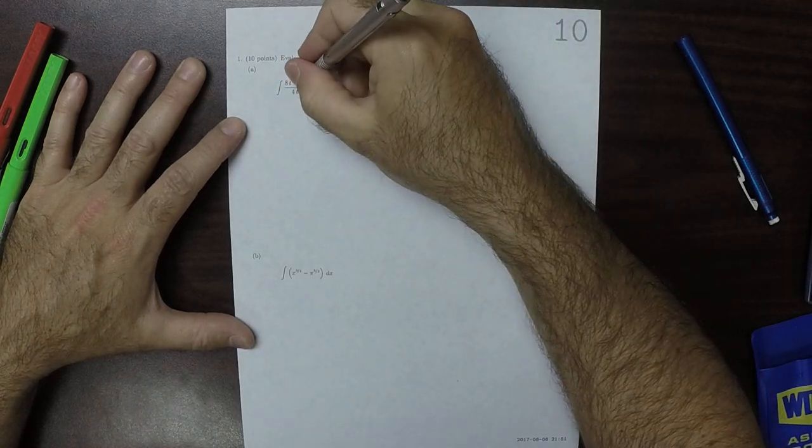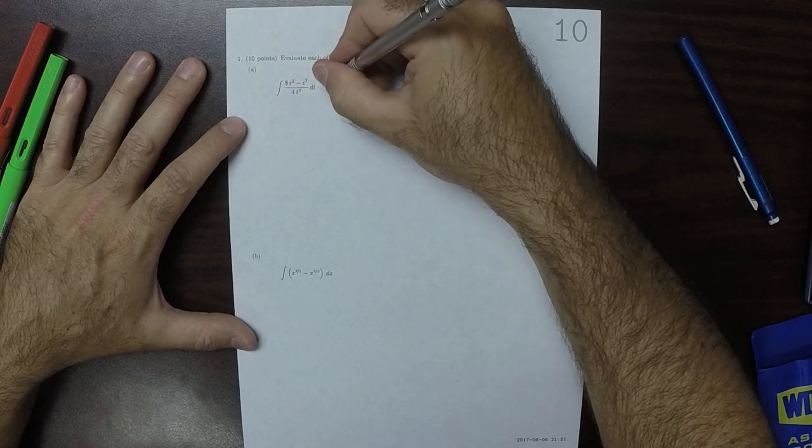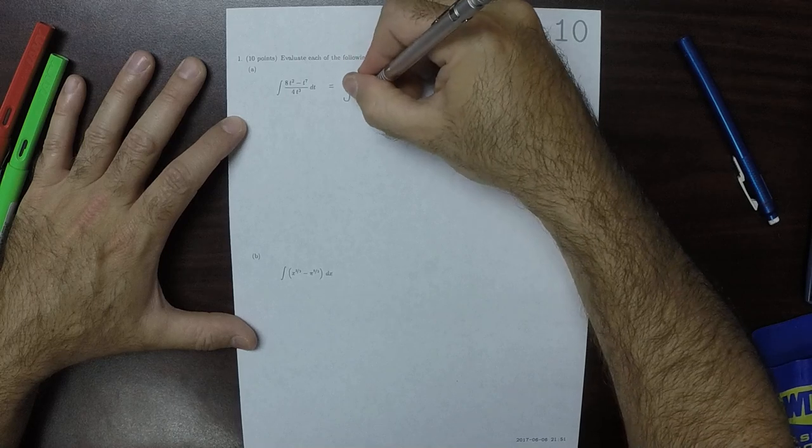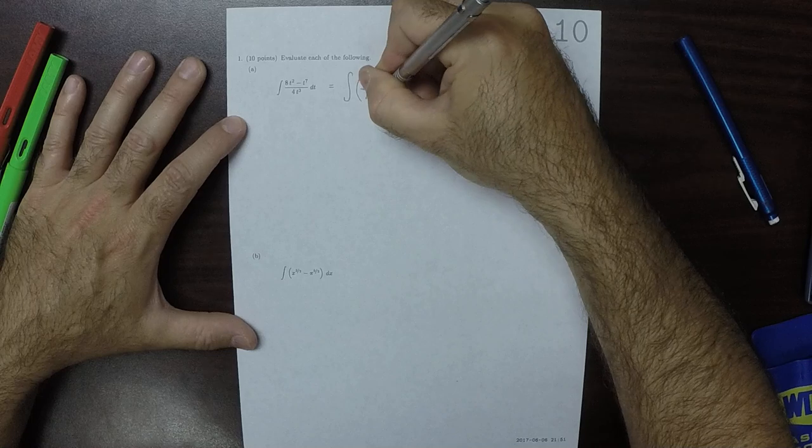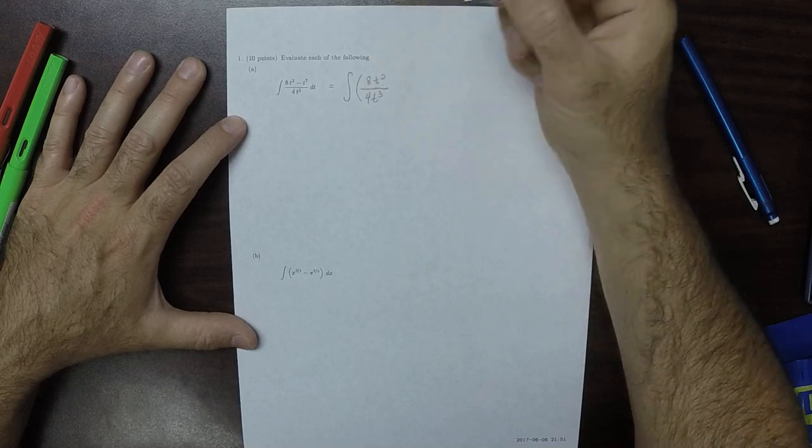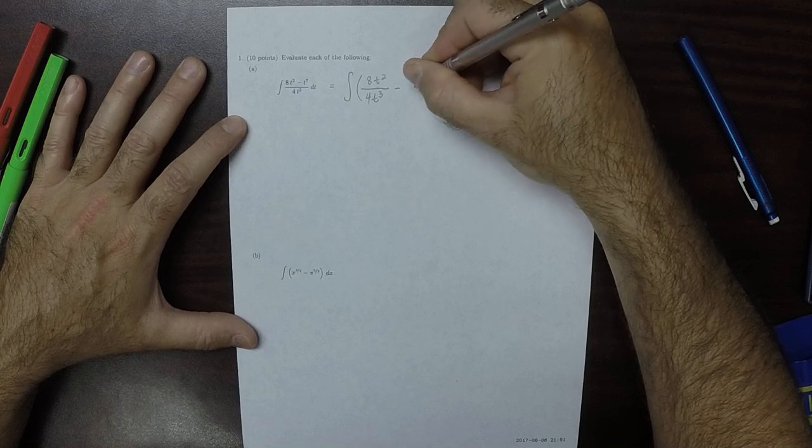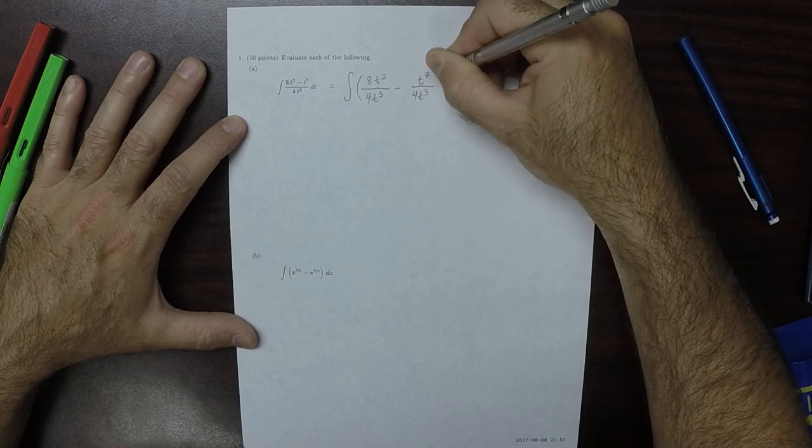This is an example of perform algebraic steps before calculus steps. So this will be antiderivative of 8t squared divided by 4t cubed, and then minus t to 7 divided by 4t cubed dt.